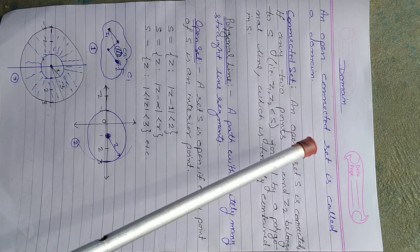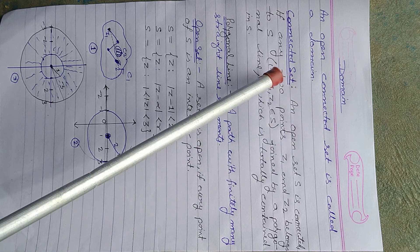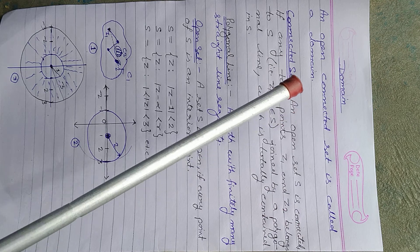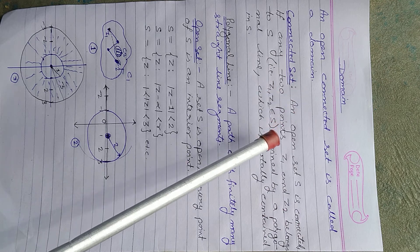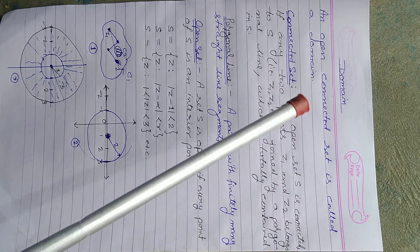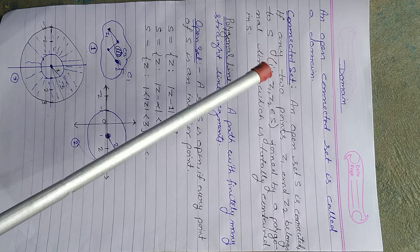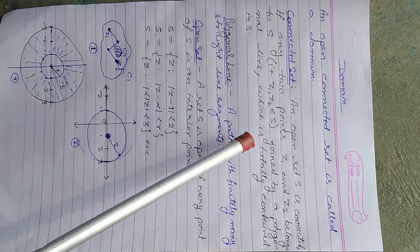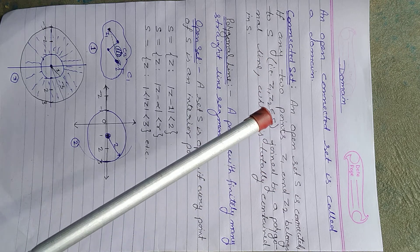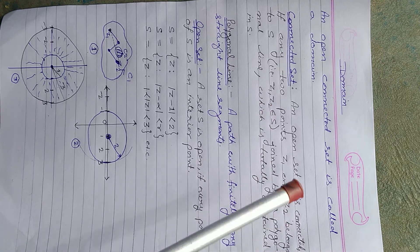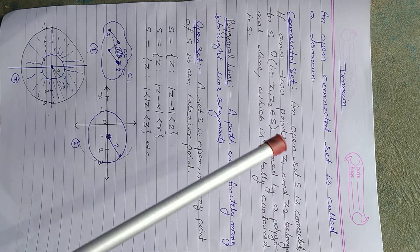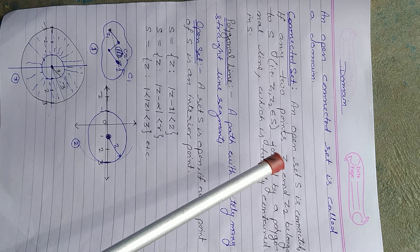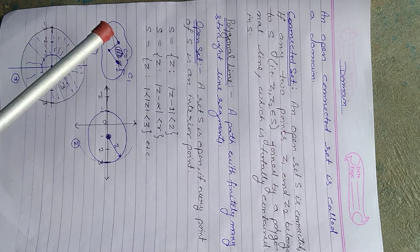The definition of a connected set is: an open set is connected if every two points z1 and z2 belonging to S are joined by a polygonal line which is totally contained in S. This is known as a connected set. It means if we have two points z1 and z2...